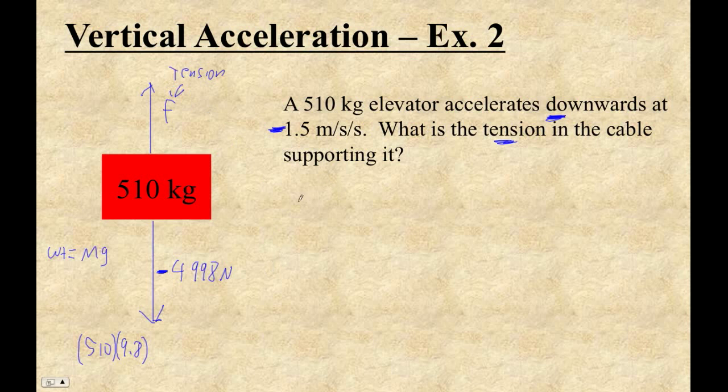But let's find out. So F equals MA is what we always start out with. But then we've got F minus 4,998, because that's going in the downward direction, equals 510 times negative 1.5.